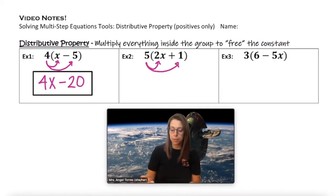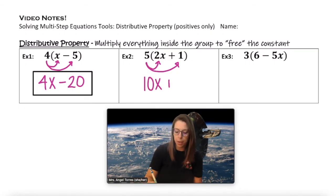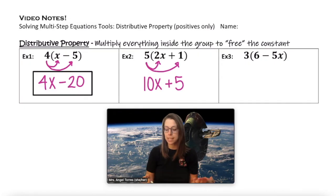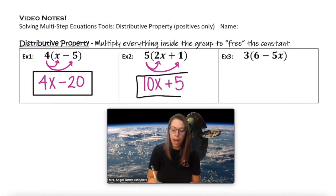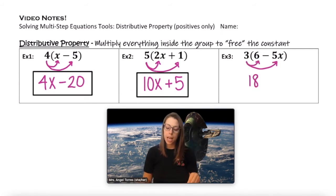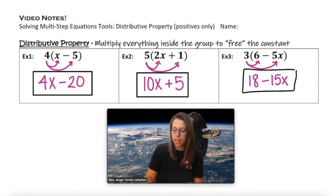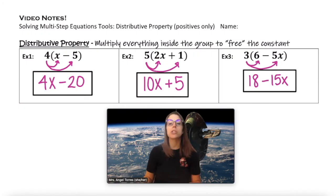5 times 2x — well, 5 times 2 is 10 — so 5 times 2x would be 10x, and 5 times a positive 1 would be a positive 5. Now that I have two terms and my constant is broken free out of the group, I know that this expression is fully simplified. 3 times 6 is 18 and 3 times negative 5x would become minus 15x. Again, my constant is free and I have two terms, so expression 3 is fully simplified.